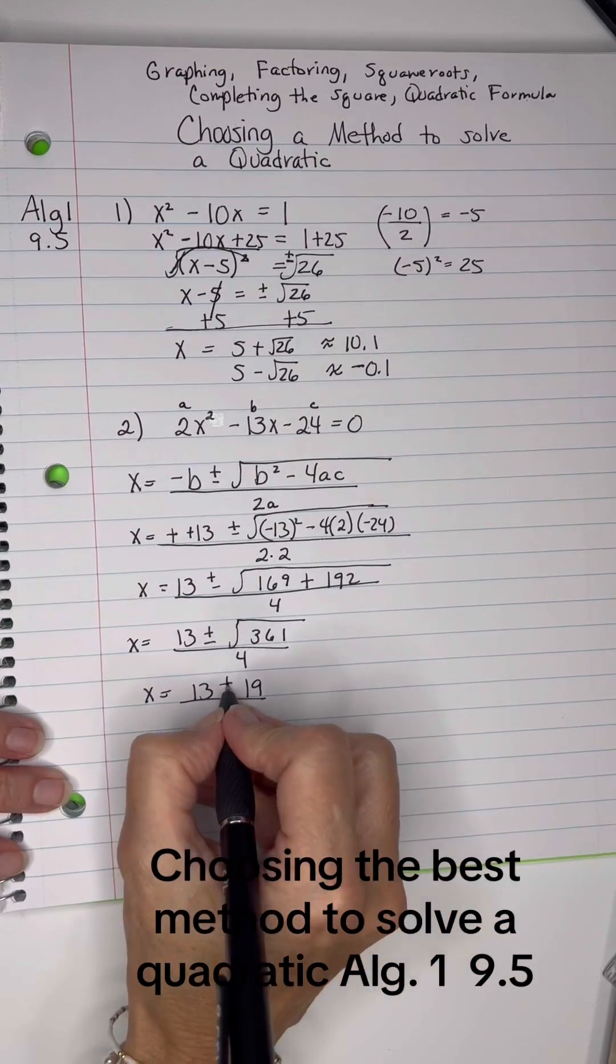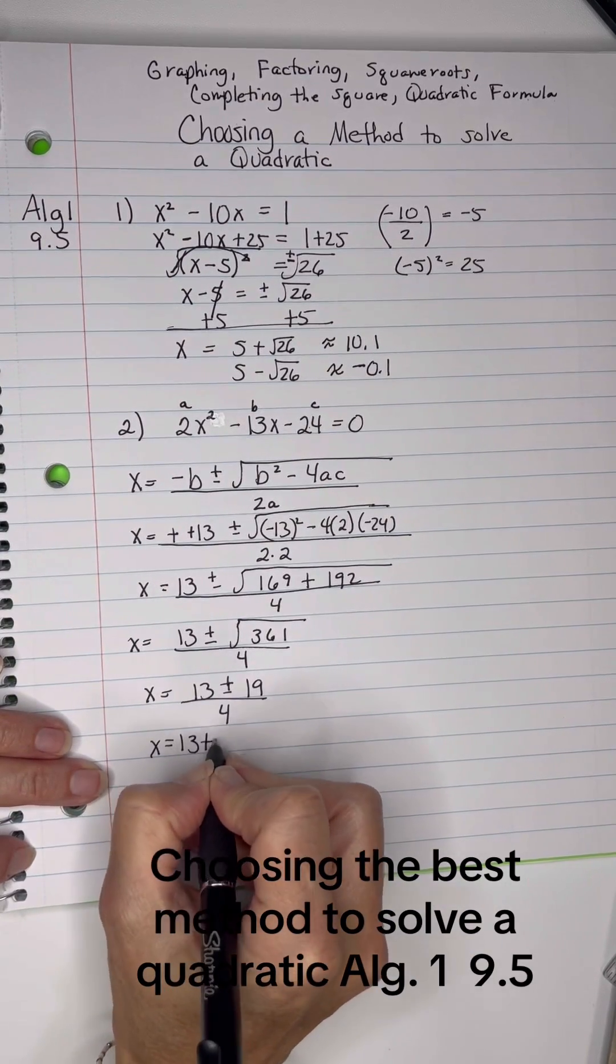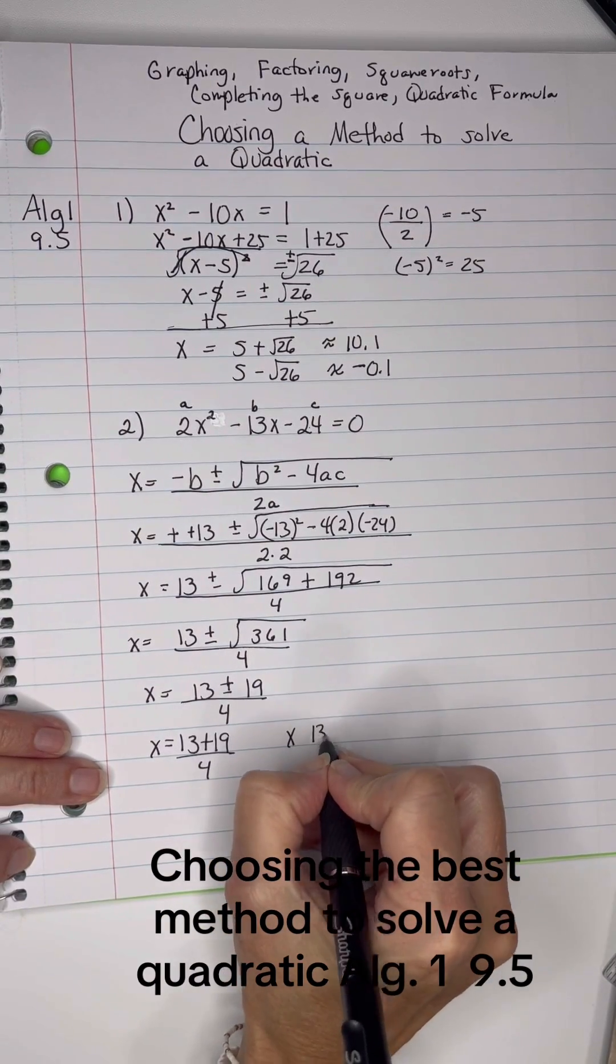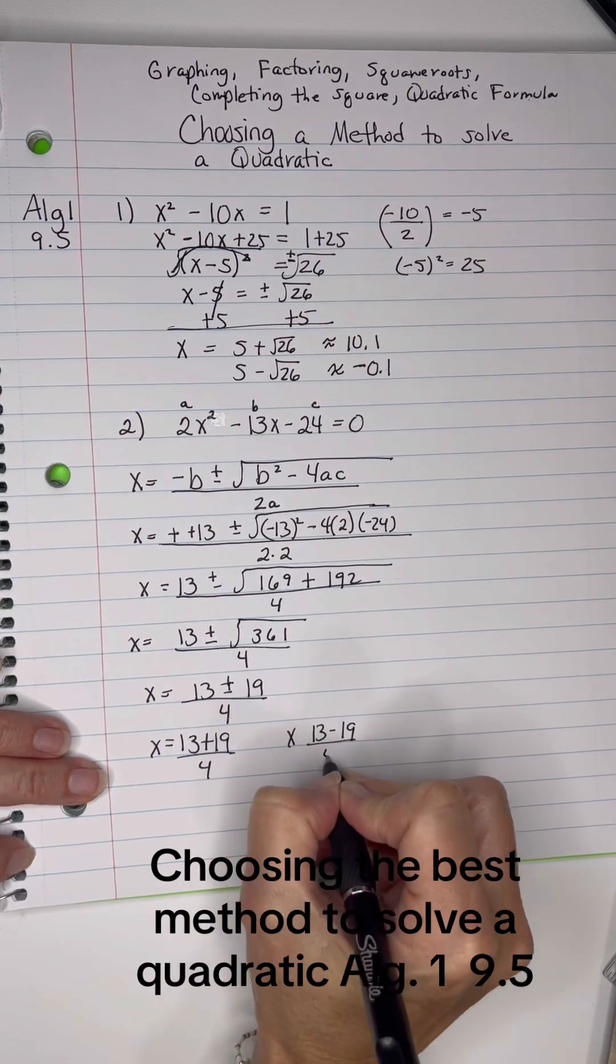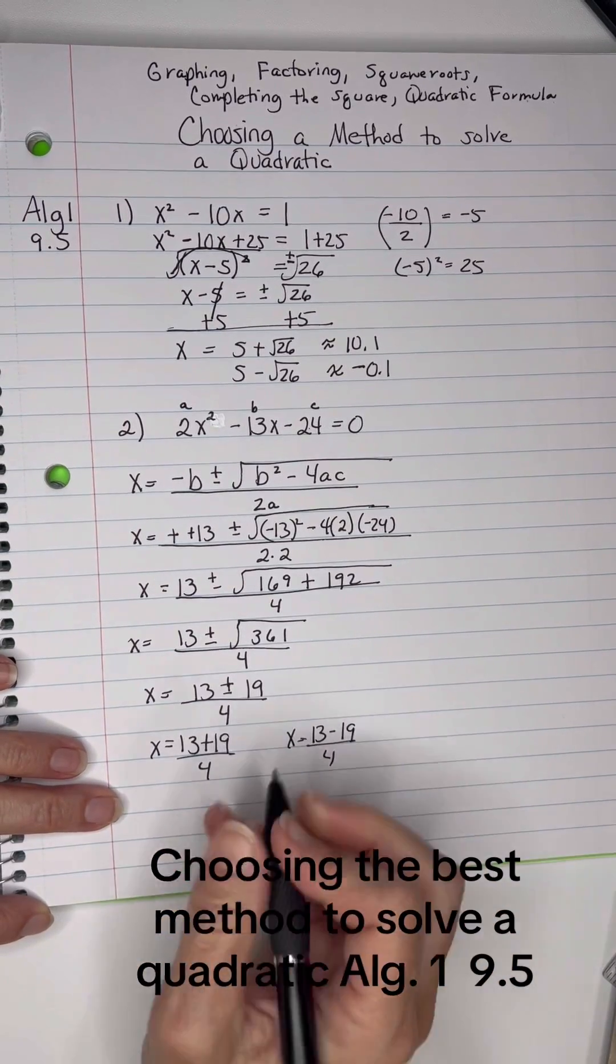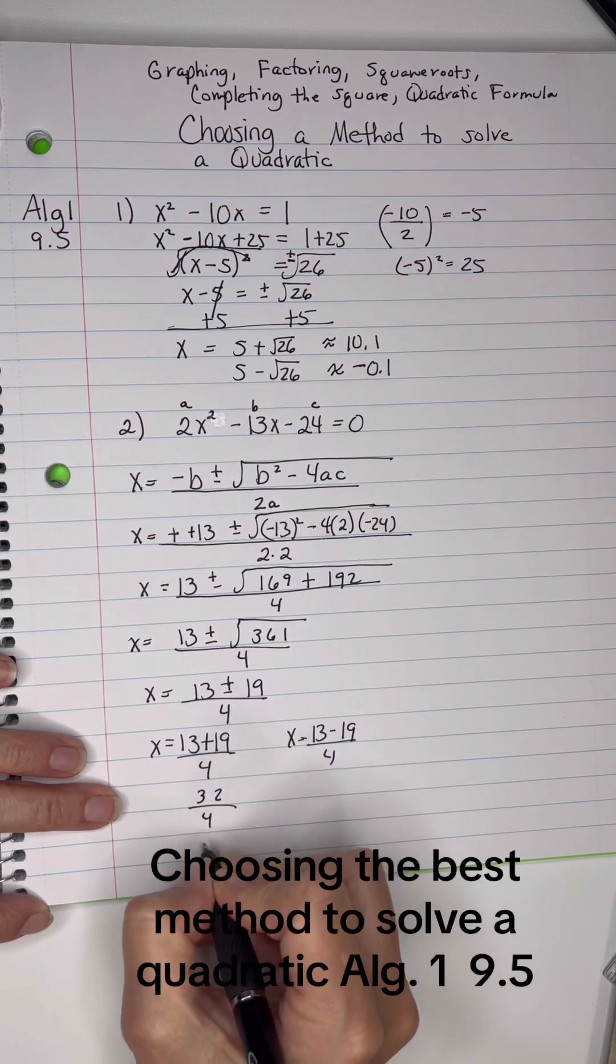Okay, so my two answers will be 13 plus 19 divided by 4 and 13 minus 19 divided by 4. All right, so let's see, that's 32 divided by 4, which is 8.